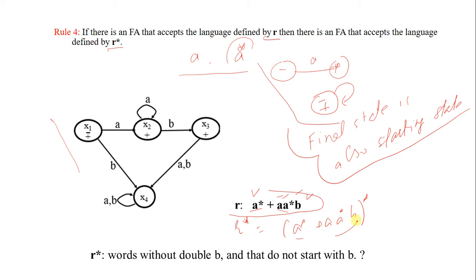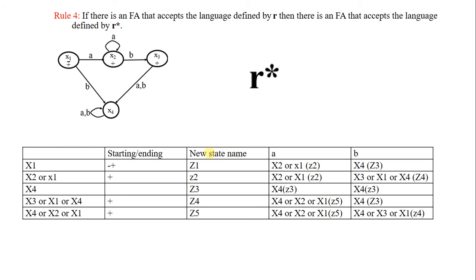Now you can repeat the whole expression again and again, so you can have more than one B's. But the resulting FA will never start with B, and it will never have double B because B is always followed by at least a single A. So now we have to draw an FA for R star. The idea is that whenever you reach the final state, assume it is also the starting state because you can start over again.